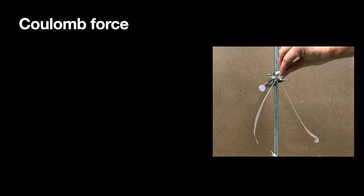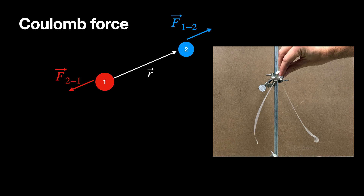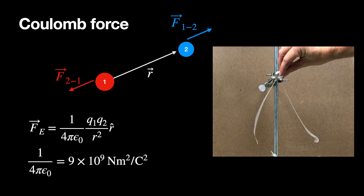Here is the Coulomb force. If you take clear tape and pull the strips apart after sticking them together, they're electrostatically charged and repel each other. If I have two point charges q1 and q2, this looks a lot like the gravitational force except instead of G I have the constant 1 over 4 pi epsilon naught, and instead of masses I have charges. There's no negative sign because same-sign charges repel, while opposite signs attract — whereas masses always attract.